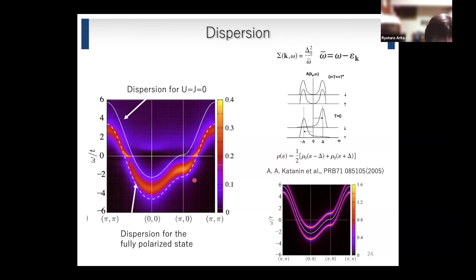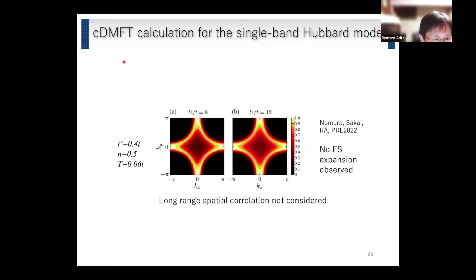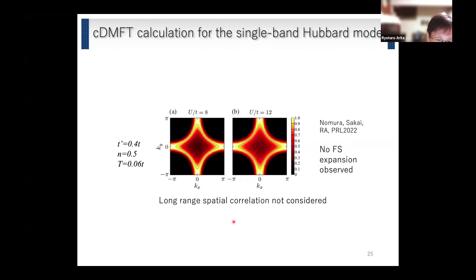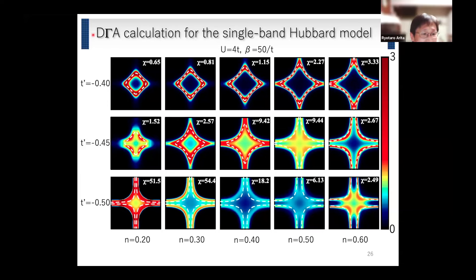We studied whether we can observe this behavior in the single-band Hubbard model, but we found that CDMFT didn't show Fermi surface expansion. It should be noted that in Andre's calculations, the system is assumed to be deep inside the renormalized classical regime where the spin correlation diverges — but in CDMFT, long-range spatial correlations are not considered. So we decided to study this problem using dynamical vertex approximation, DΓA.